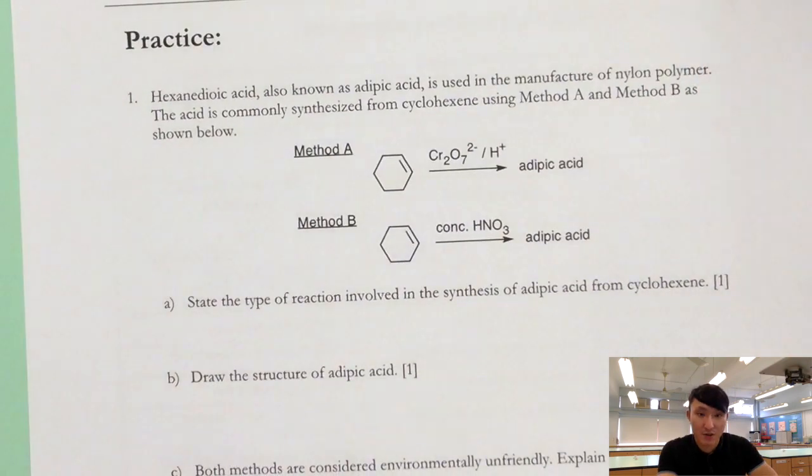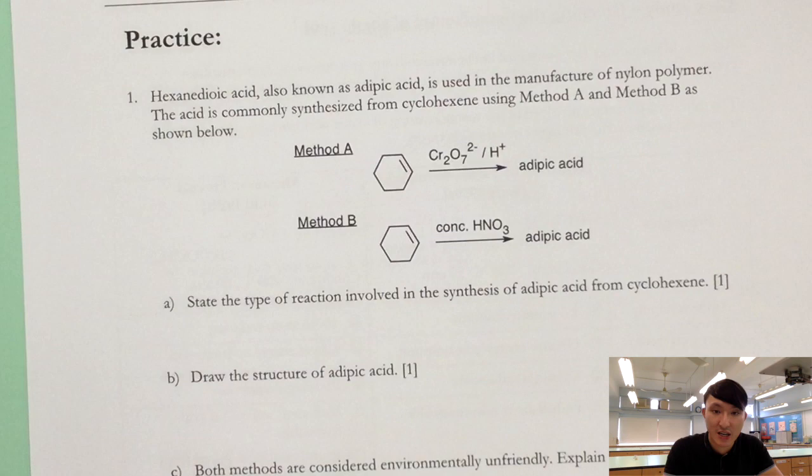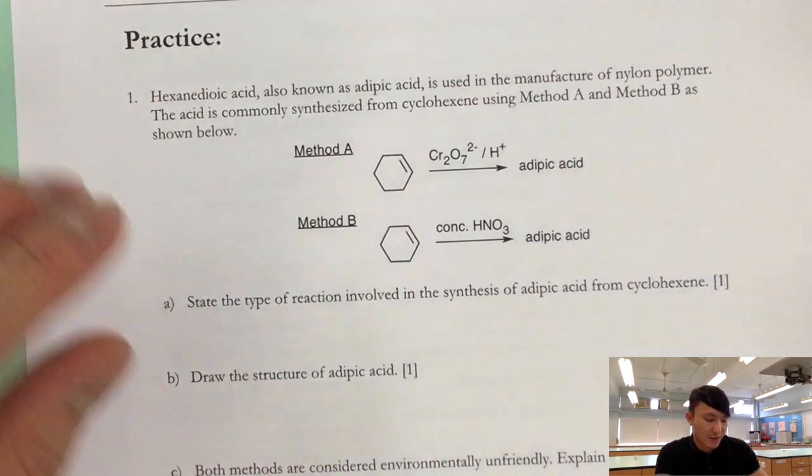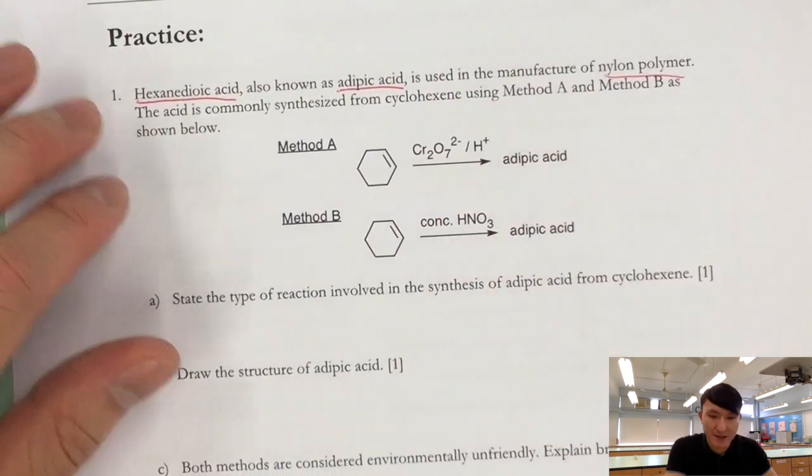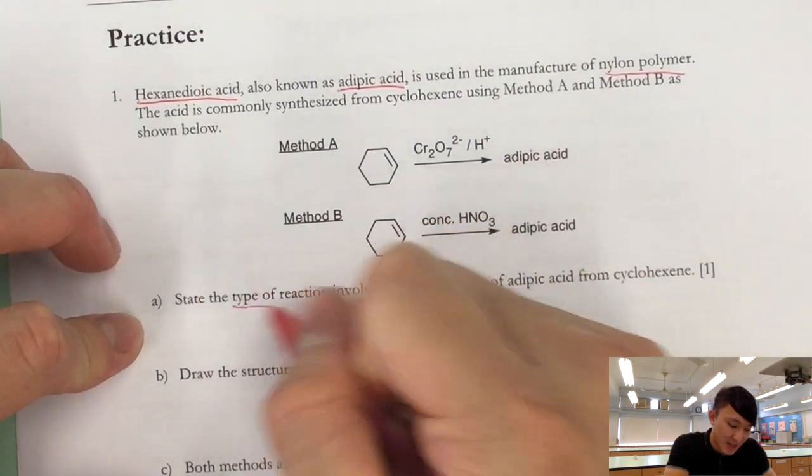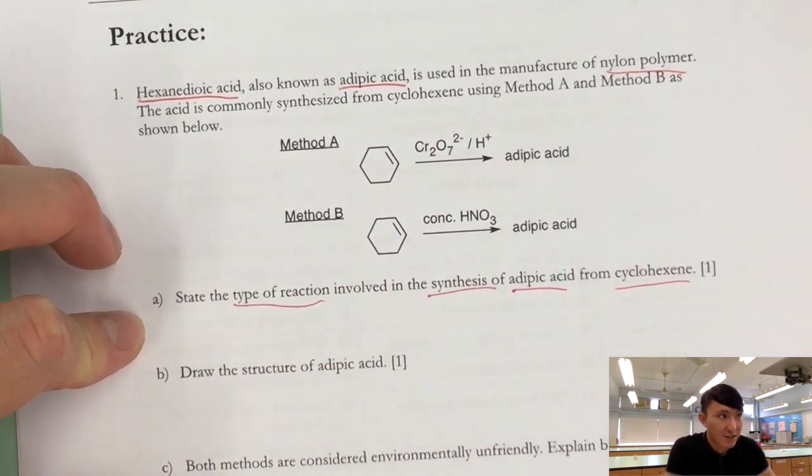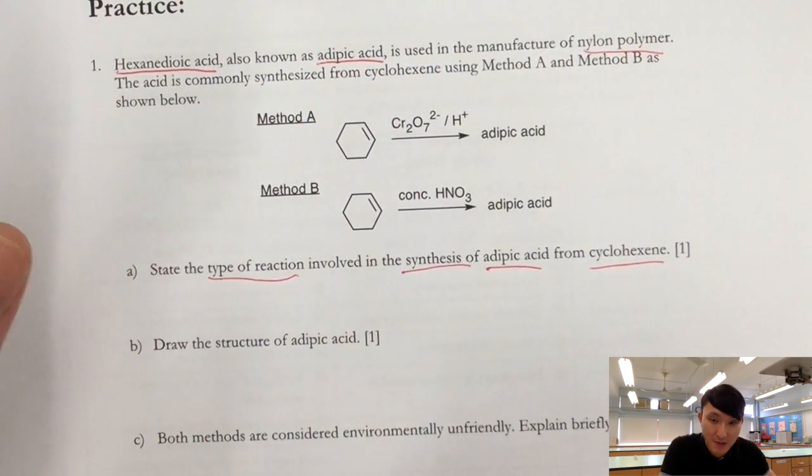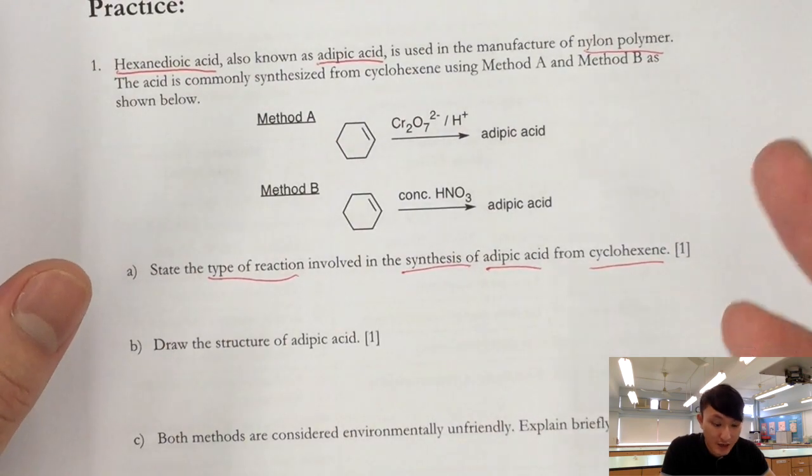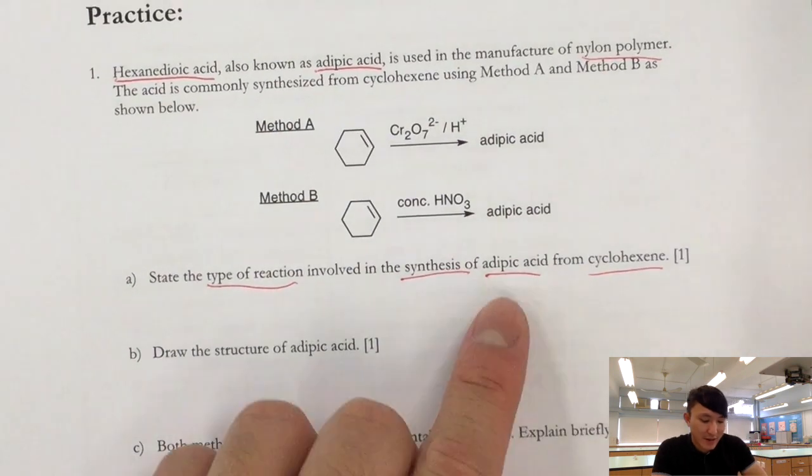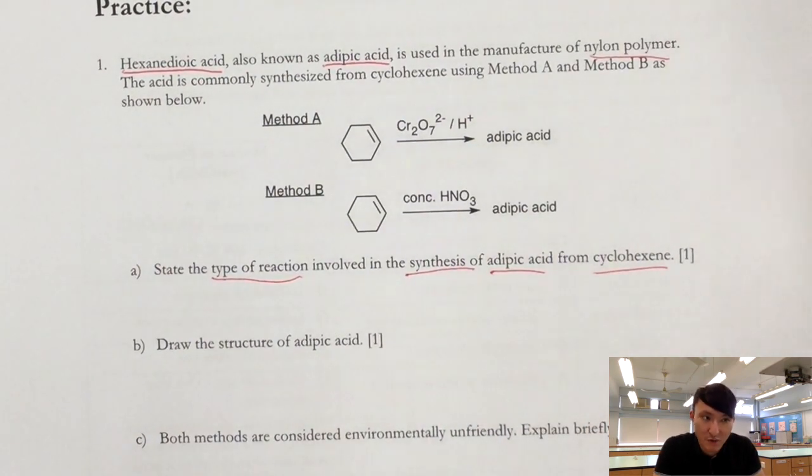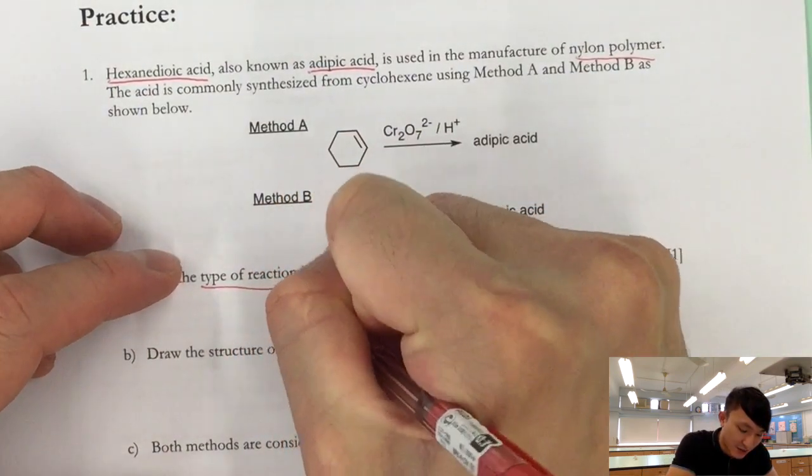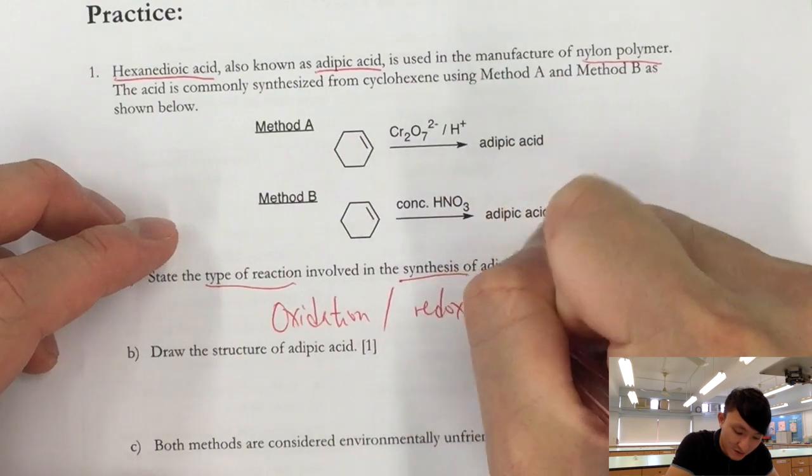At the back, we have a practice question. You know the drill, pause the video, attempt the question, then resume the video and check the answers. Let's have a look. Hexanedioic acid, also known as adipic acid, is used to manufacture nylon polymer. And there are two different methods to make adipic acid. State the type of reaction in the synthesis of adipic acid from cyclohexene. Alkene to carboxylic acid. Did we learn it? Actually, we don't. So how do we know? Well, at least you know, adipic acid is a carboxylic acid. That means at least it has two oxygen atoms. Cyclohexene, on the other hand, has no oxygen atom at all. So you're changing from no oxygen atom to having two oxygen atoms. This is very likely to be oxidation. So this one, you can put down oxidation or you can put down redox reaction.